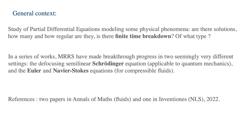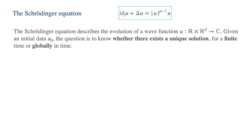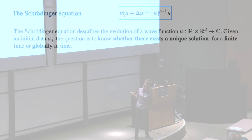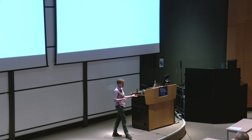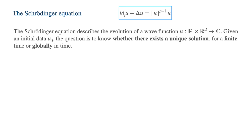Let me start with the Schrödinger equation — a well-known equation coming from quantum physics. U is a complex-valued function depending on time and position. Time will be in R, position in R^d where d is the dimension of physical space. The question is: given initial data U0, can you solve this equation? P here is a number we'll define later; it's a nonlinear equation. Can you find a solution U equal to U0 at time zero?